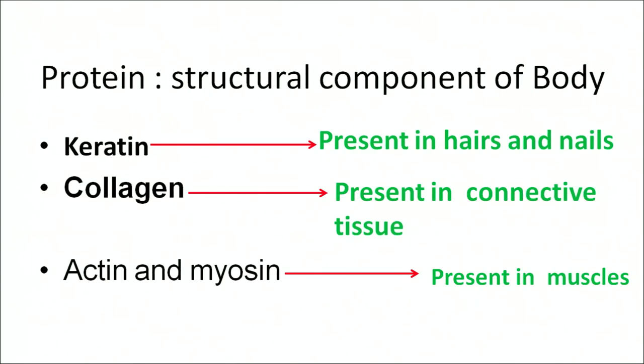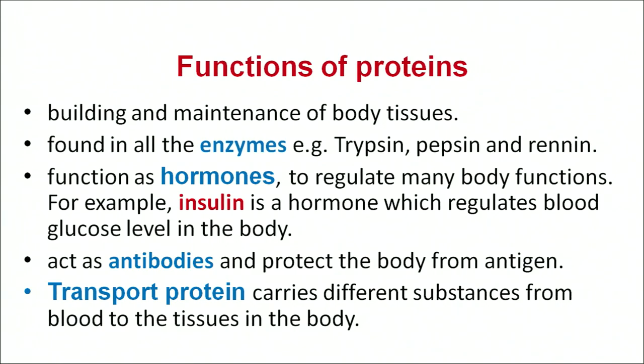Protein structural components of the body: keratin is found in hair and nails; collagen is found in connective tissues; actin and myosin are present in muscles. The major function of protein is building and maintenance of body tissues. They are found in all enzymes like trypsin, papain, and renin. They also function as hormones and regulate body functioning — for example, insulin is a protein that regulates blood glucose level. They also act as antibodies and protect our body from various infections. Transfer proteins carry important substances from the blood to the tissues.